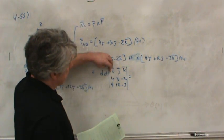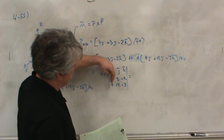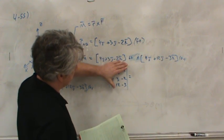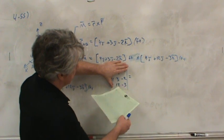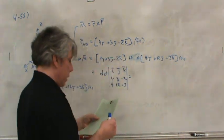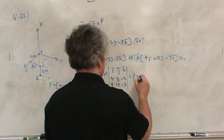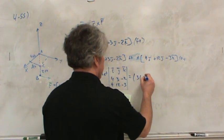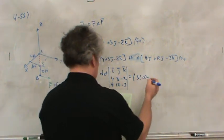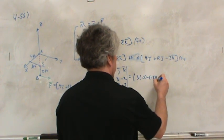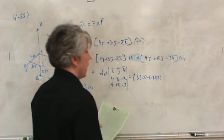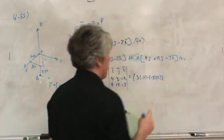So, in calculating the i component, block out in your mind the column and row that i are in. And then multiply 3 times negative 3 minus negative 2 times 12. Like this. 3 times negative 3 minus negative 2 times 12. And that is the i component.